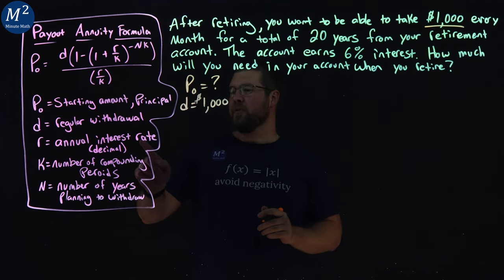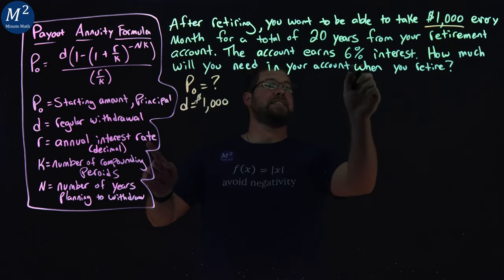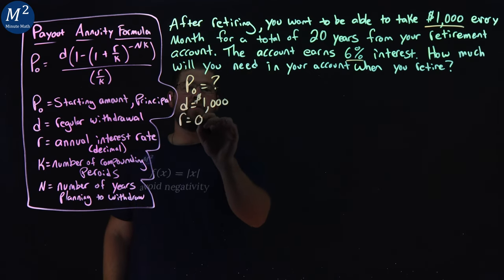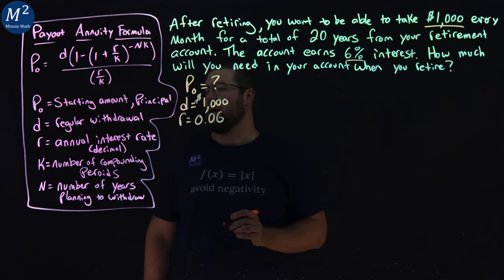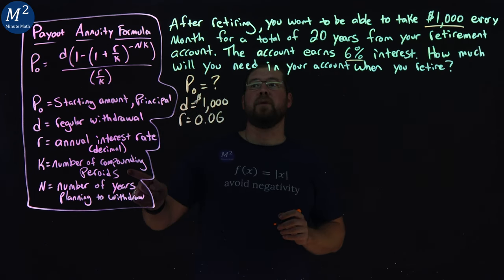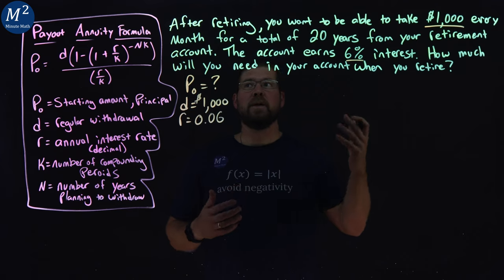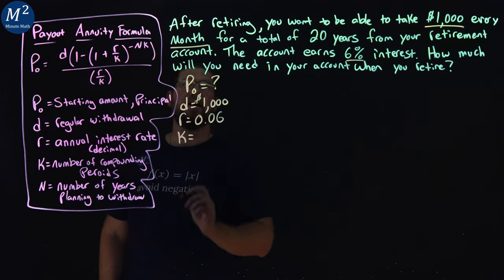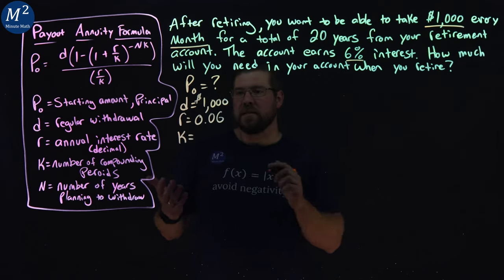Now the annual interest rate they tell us is 6%. So the account here, 6% as a decimal, 0.06. And the number of compounding periods, this is every month that it's happening. So our compounding periods K is going to be 12, 12 months in a year.